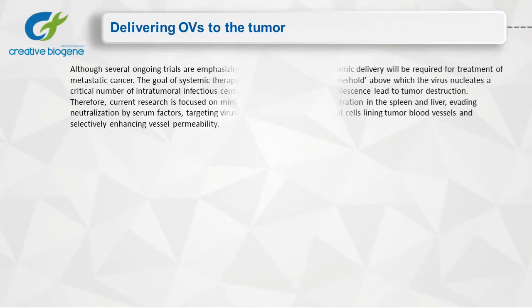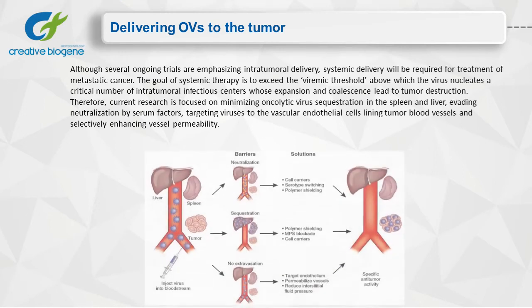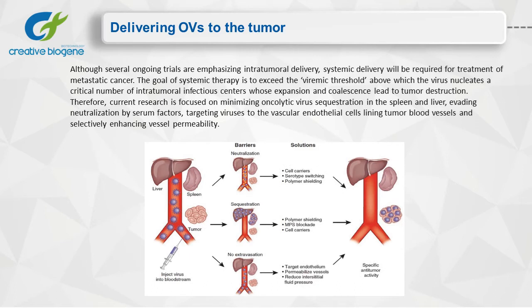Although several ongoing trials are emphasizing intratumoral delivery, systemic delivery will be required for treatment of metastatic cancer. The goal of systemic therapy is to exceed the viremic threshold above which the virus nucleates a critical number of intratumoral infectious centers whose expansion and coalescence lead to tumor destruction. Therefore, current research is focused on minimizing oncolytic virus sequestration in the spleen and liver, evading neutralization by serum factors, targeting viruses to the vascular endothelial cells lining tumor blood vessels, and selectively enhancing vessel permeability.